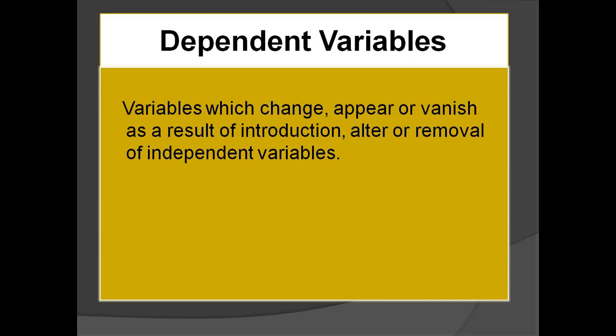The dependent variable is the variable whose change appears or vanishes as a result of the introduction, alteration, or removal of the independent variable. Basically in a research problem, we alter or introduce an independent variable and study its effect on the dependent variable — whether the dependent variable changes with the change in independent variable. We will discuss its example at the end of the video.